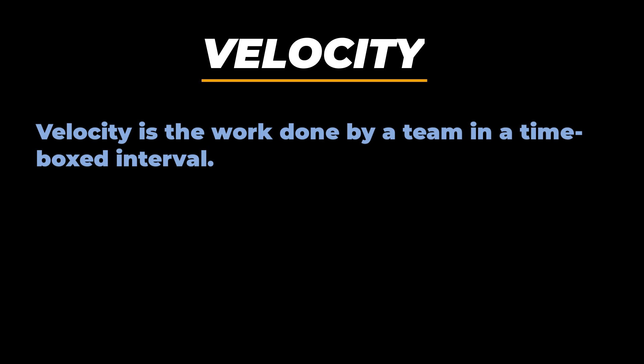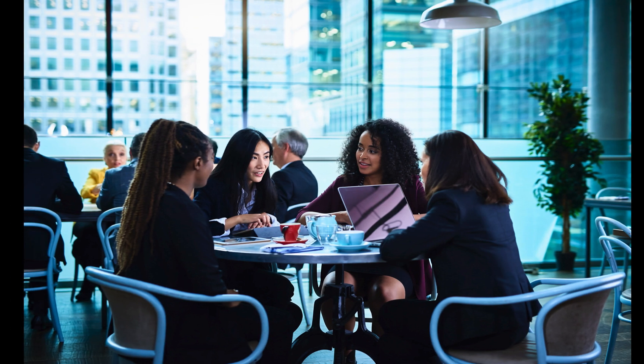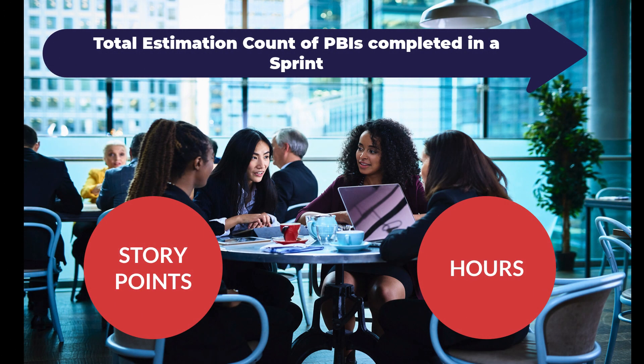What is velocity and a velocity chart? Velocity is the measure of work done by a team in a particular time-boxed interval or iteration. If a team is following Scrum, they define their velocity as the total estimation count of product backlog items (PBIs) completed in a sprint. The unit of measure can be story points or hours, depending on the estimation model the team is following. When talking about velocity, we should accept a few things with an open mind.